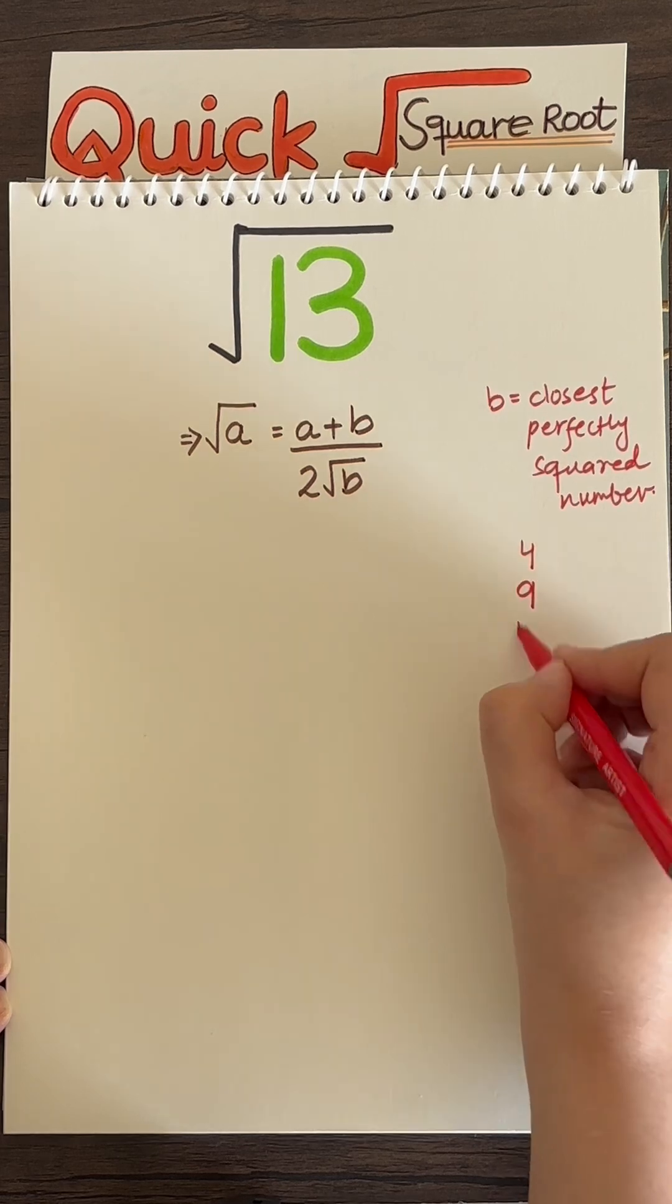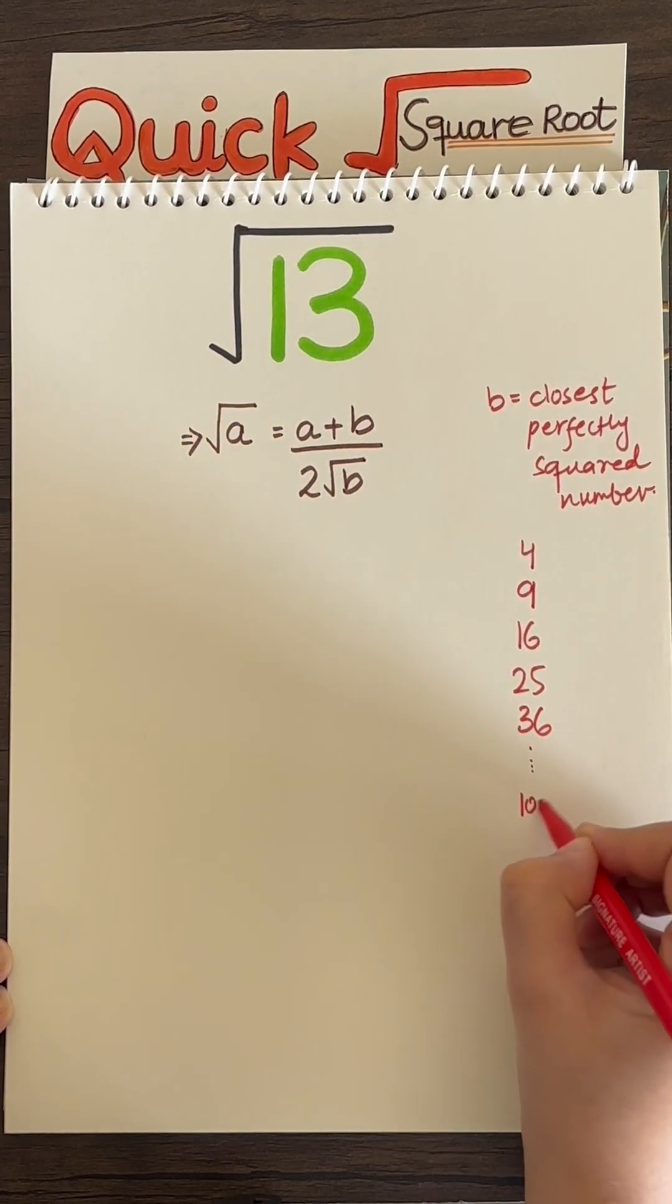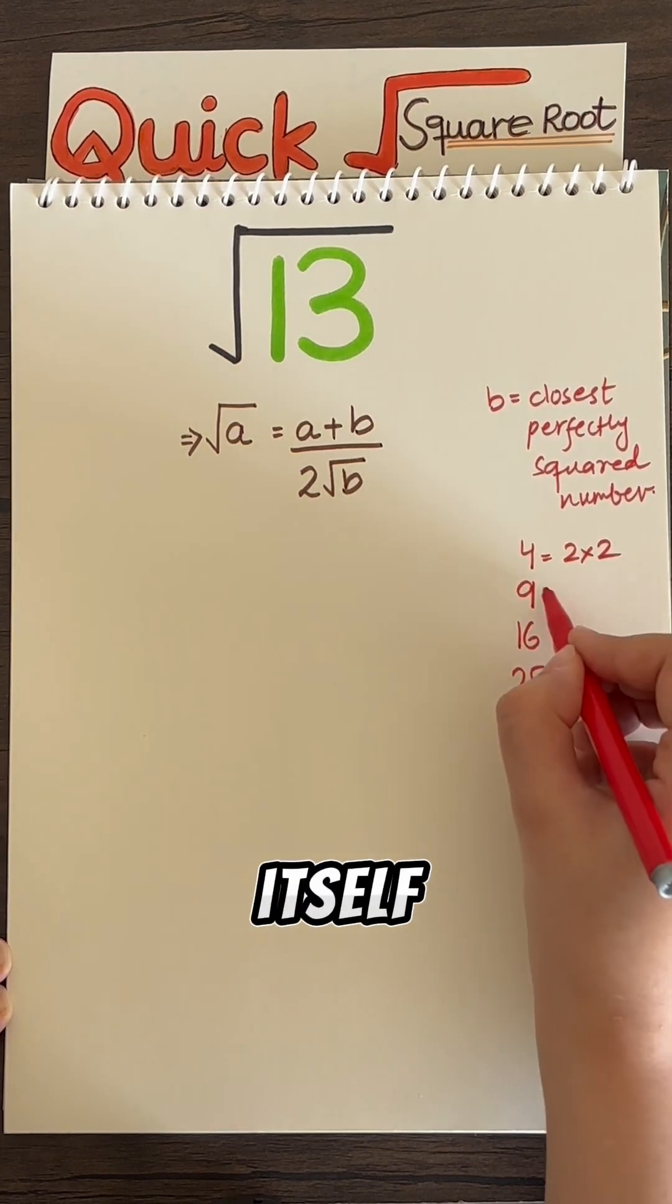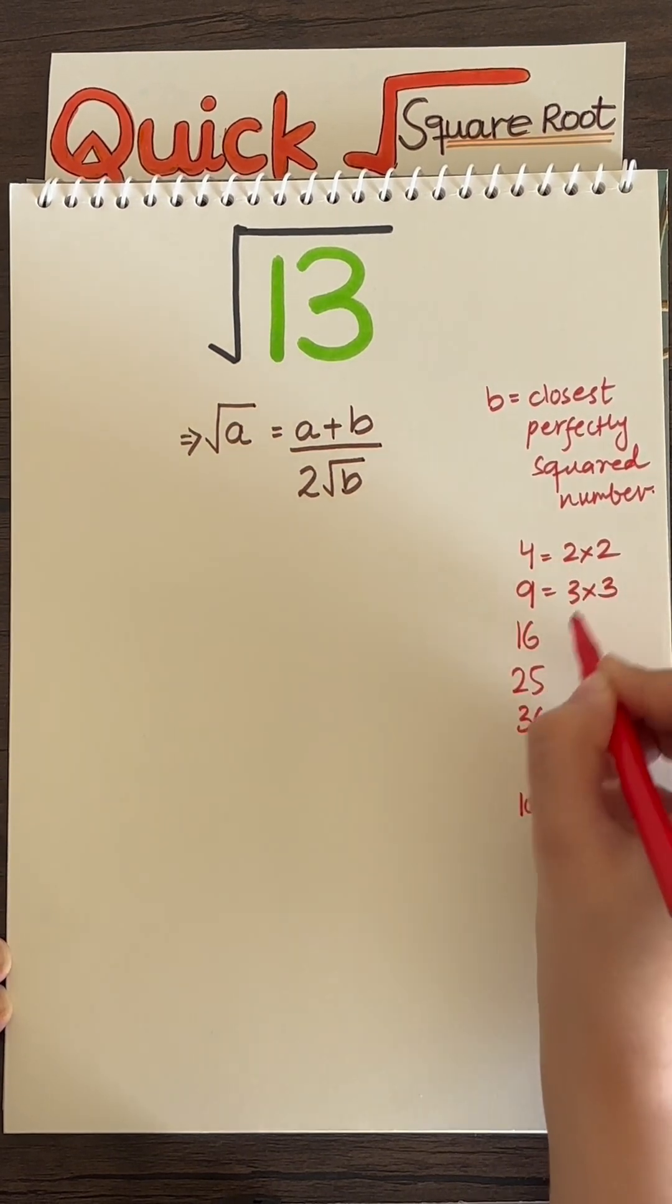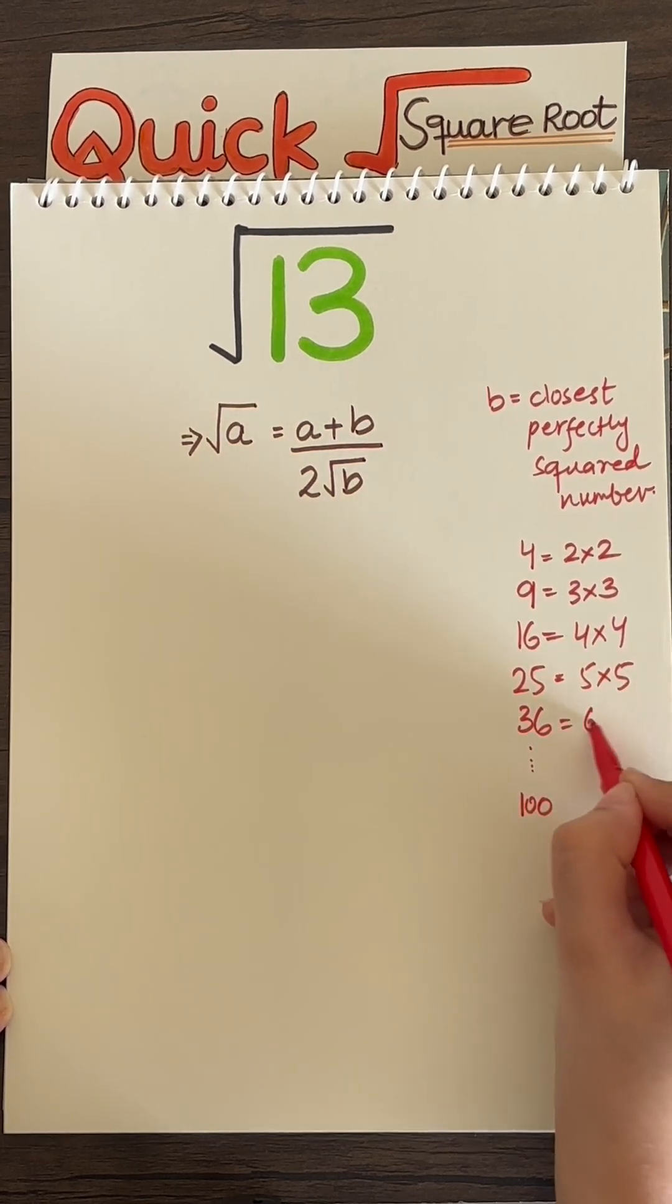like 4, 9, 16, 25, 36, 100, and so on. These are special numbers. They happen when you multiply a number by itself, like 2 by 2, 3 by 3, 4 by 4, 5 by 5, 6 by 6, and so on.